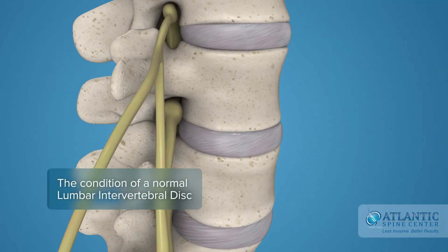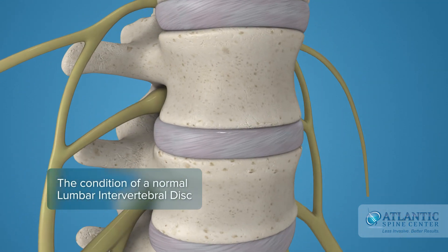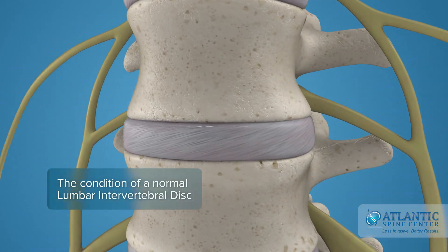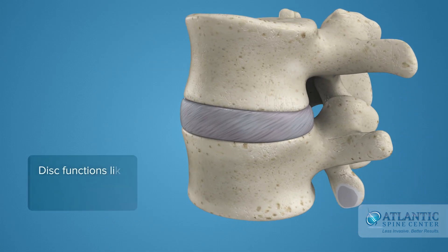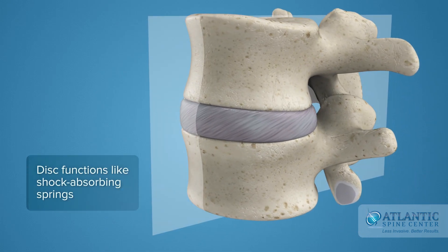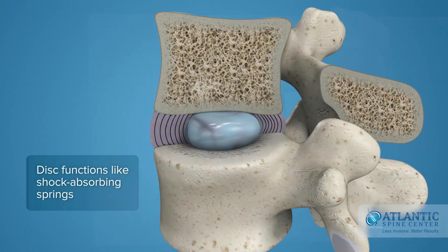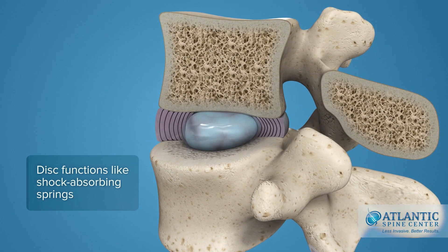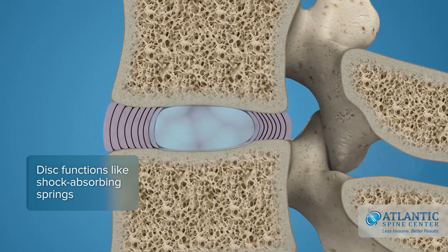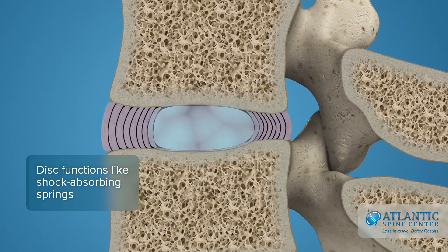This is the condition of a normal lumbar intervertebral disc. Discs function like shock-absorbing springs. The annulus pulls the vertebral bodies together against the elastic resistance of the gel-filled nucleus.